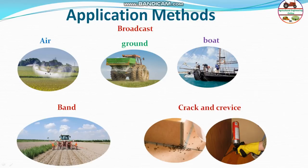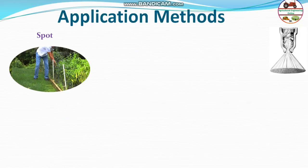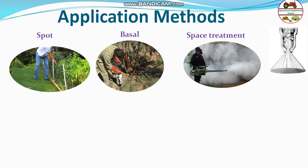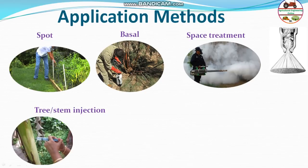Spot application applies spray precisely where needed. Basal application is applied at the base of the tree. Space treatment controls flying insects or other pests in the air using fogs or similar agents. Stem injection involves injecting hormones, growth enhancers, or pesticides through a syringe into the base or stem of the tree.